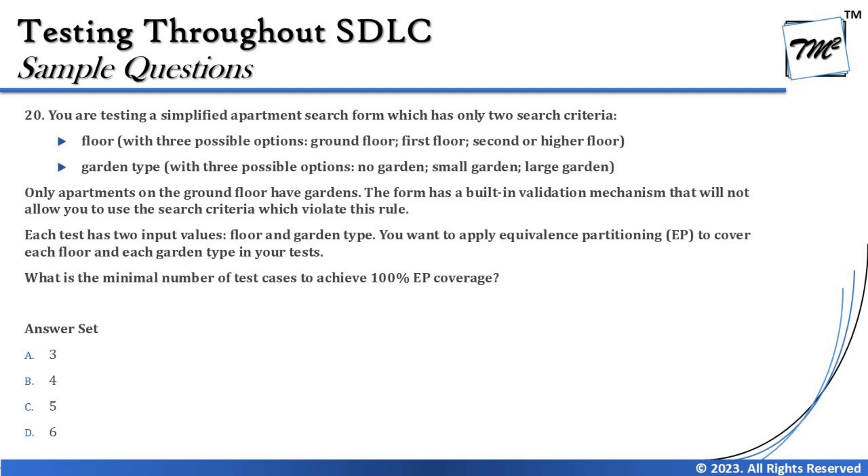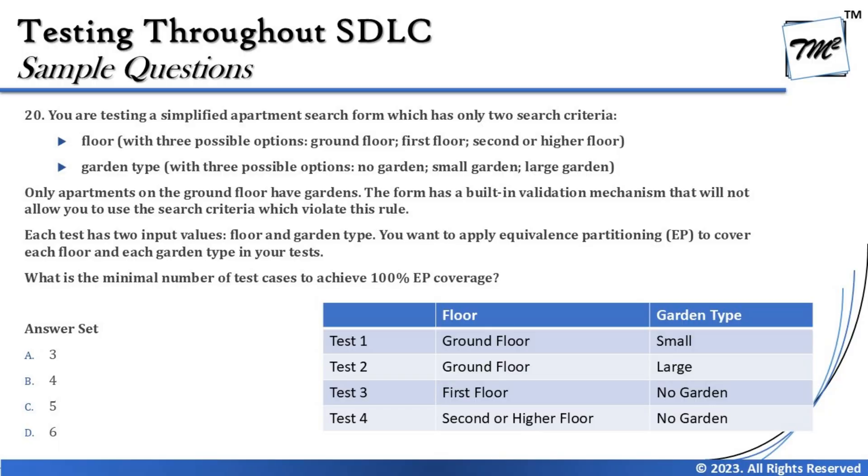The minimum number of test cases to achieve 100% equivalence partitioning coverage: for ground floor you have two valid options — small garden and large garden — since no garden is not a valid option there. For first floor, only no garden. For second or higher floor, only no garden. Combining these gives us four test cases stacked together.